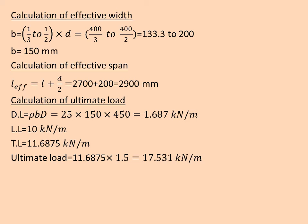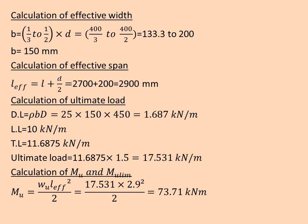When a load acts, there will be resisting moment. Next step: calculation of MU and MU limit. For cantilever beams under UDL, moment is equal to WL²/2. That is WU into L effective squared by 2: 17.531 into 2.9² divided by 2. We get 73.71 kNm.